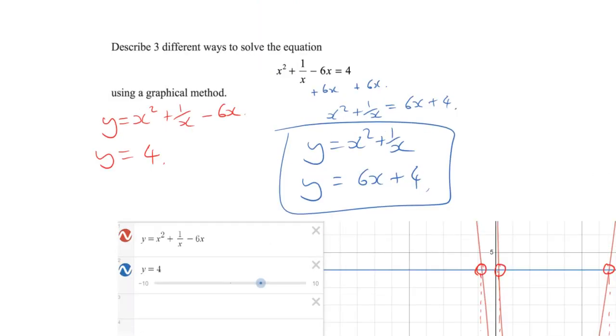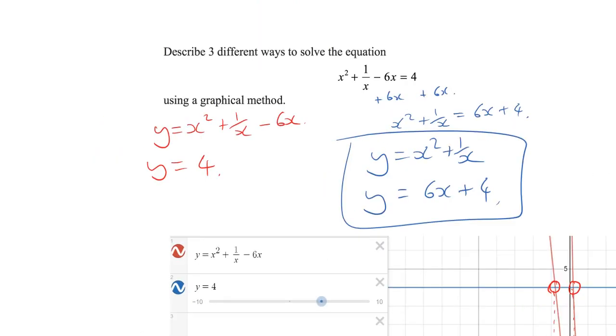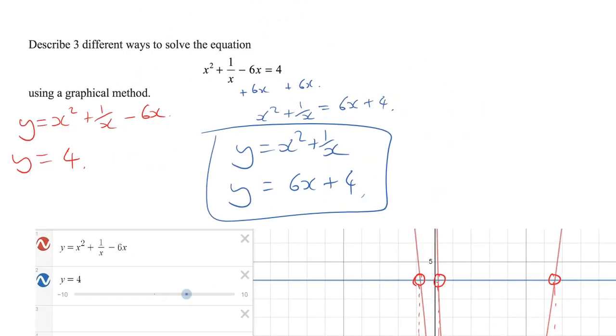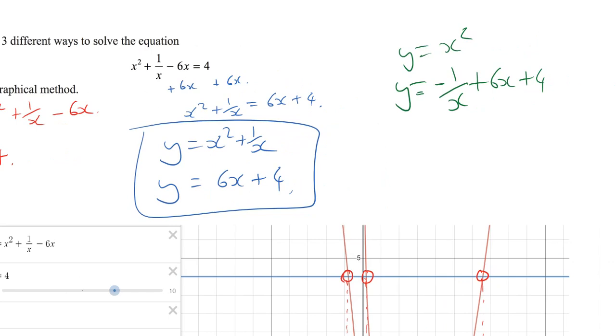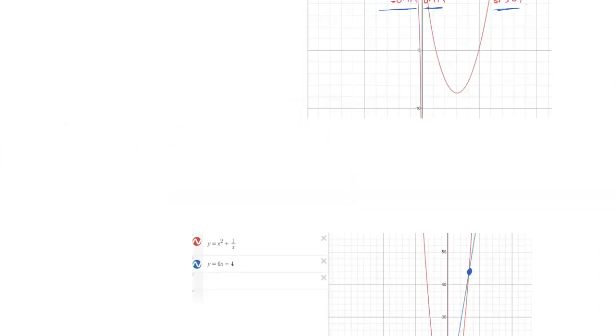Now, again, you can probably make up another one now. We could plot y equals x squared, for example. So I can manipulate that again in a different way and just write out y equals x squared and y is equal to negative 1 over x plus 6x plus 4. Because that is equivalent to the original expression, because you've moved things around in this certain way, that's going to give us the same answers as well.